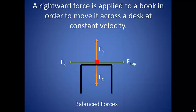The gravity force and the normal force are equal in magnitude and opposite in direction, and the friction force and the applied force are equal in magnitude and opposite in direction. We can again say that the forces acting on the book are balanced.